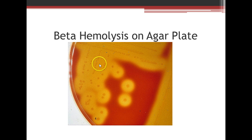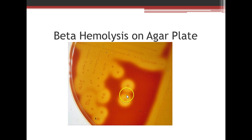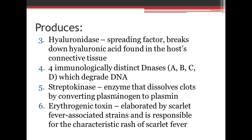On the blood agar plate image: before this was done, the whole plate was red — the red area is sheep's blood. The little dots are the bacteria growing, causing hemolysis of the sheep's red blood cells around them. Other extracellular products include hyaluronidase, known as the spreading factor, which breaks down hyaluronic acid found in host connective tissue. There are four immunologically distinct DNAses — A, B, C, and D — which degrade DNA. Streptokinase is an enzyme that dissolves clots by converting plasminogen to plasmin. Erythrogenic toxin is elaborated by scarlet fever-associated strains and is responsible for the rash in scarlet fever.